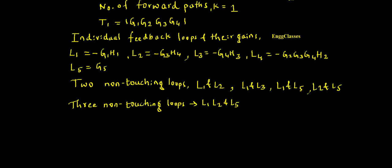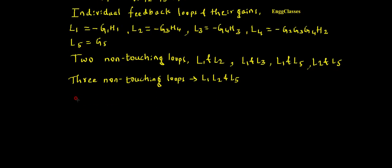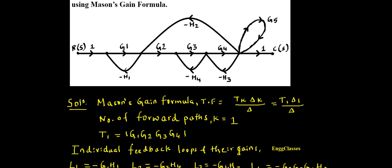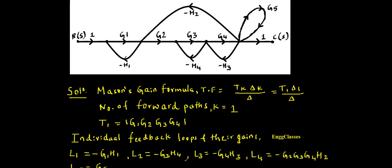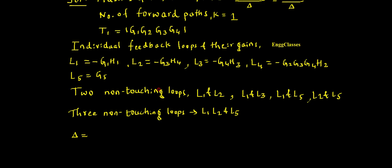The next task is to find Δ1. To find Δ1, I check forward path T1 = G1·G2·G3·G4, and for this forward path, which loops are non-touching? All the loops are touching this forward path. Hence Δ1 = 1.